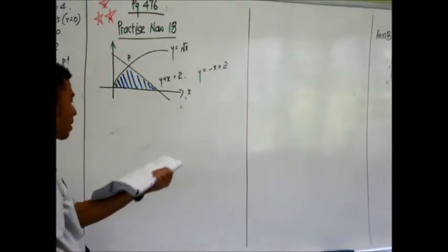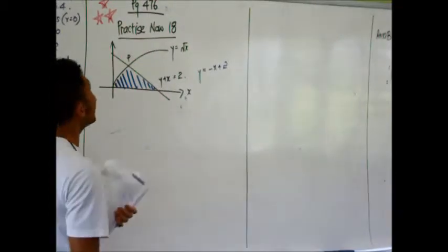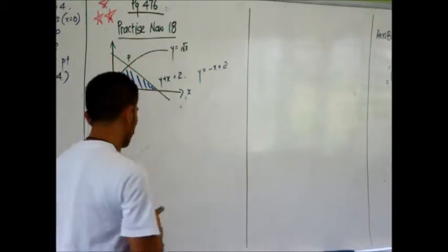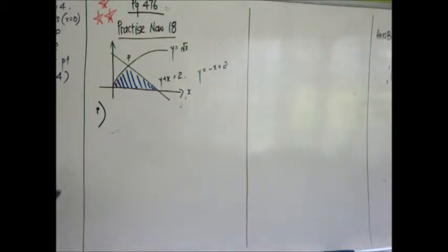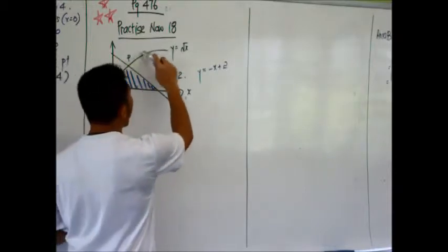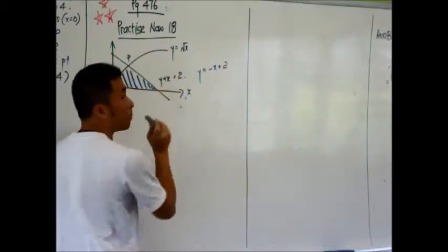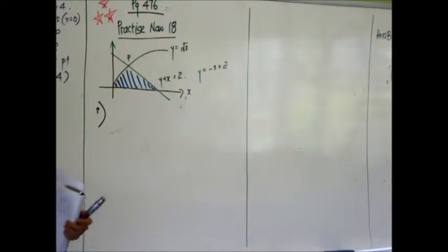Then you just have to look at the question by itself. Find the coordinates of P. How do we find the coordinates of P? Simultaneous equation. Can you see that the curve cuts the straight line at P? So, it's the use of simultaneous equation.